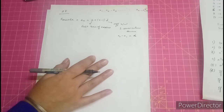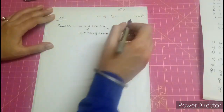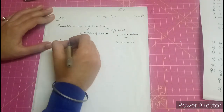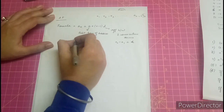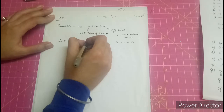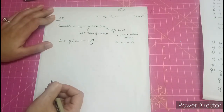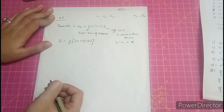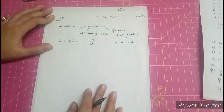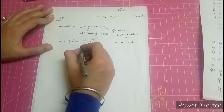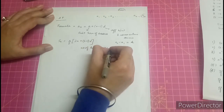If you want the sum of the whole series, the formula is n by 2 into 2a plus n minus 1 into d. Here n is the number of terms in the series.